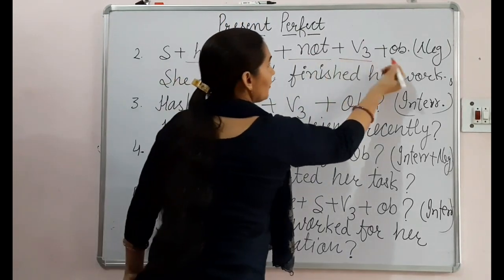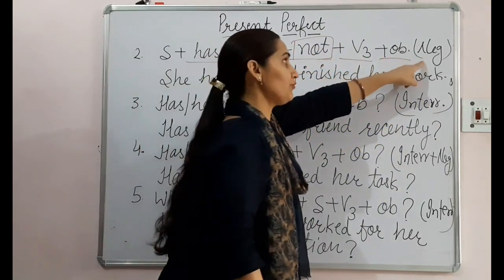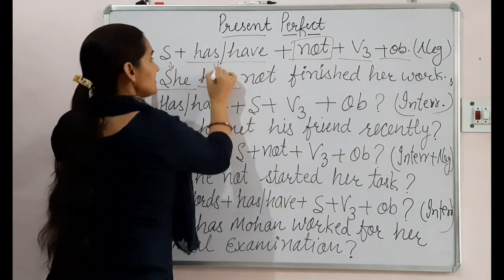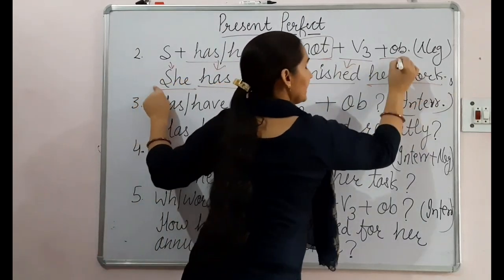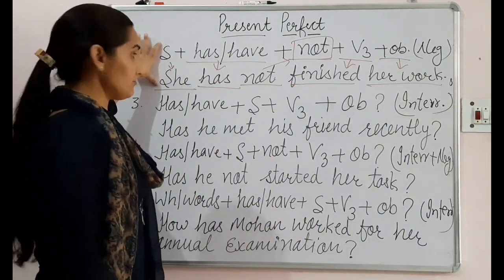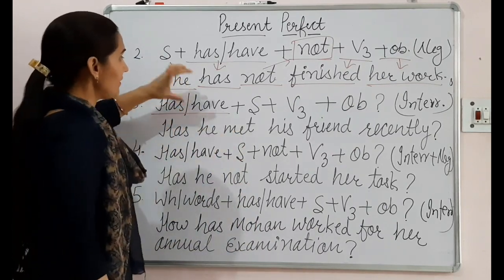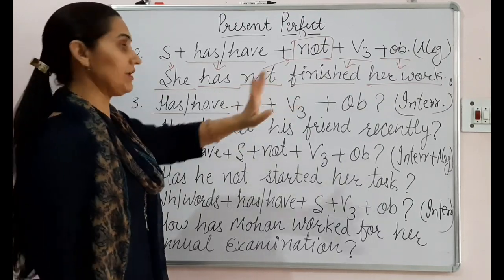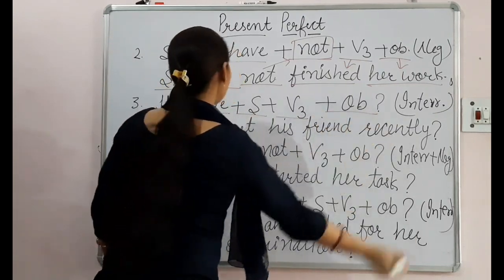The second formation is for a negative sentence: subject + has/have + not + third form of verb + object. If 'not' is added, it becomes a negative sentence. The third formation is for an interrogative sentence: when the helping verb 'has' or 'have' comes at the beginning of the sentence, it becomes interrogative — has/have + subject + third form of verb + object.